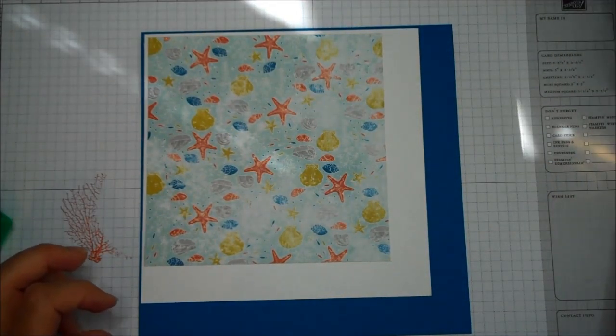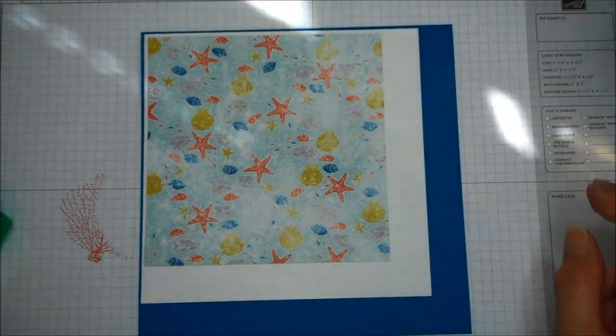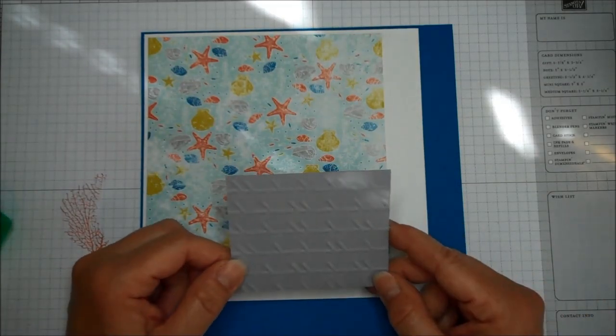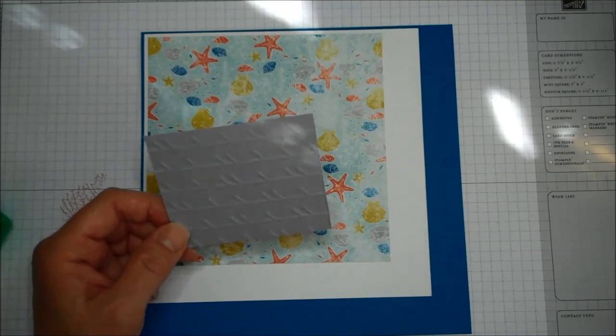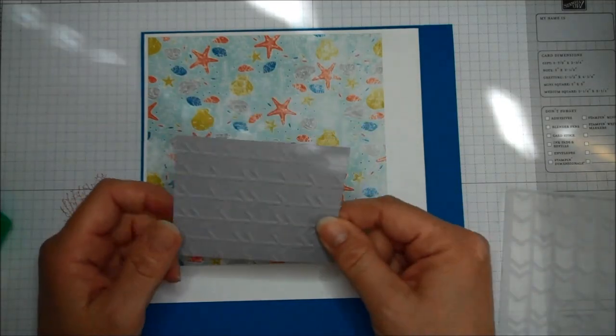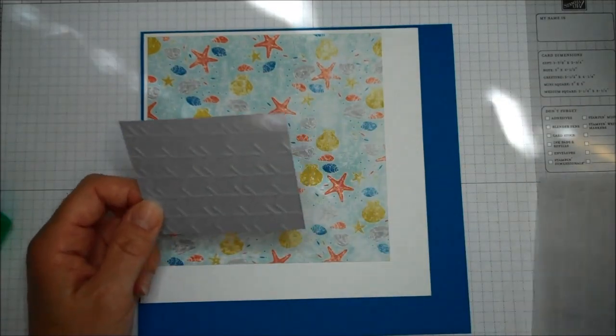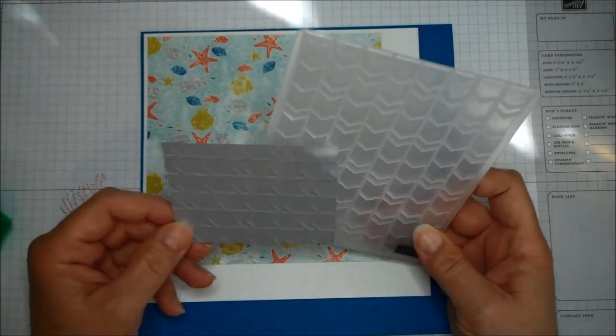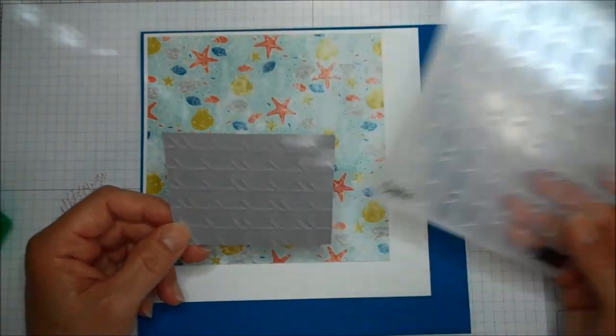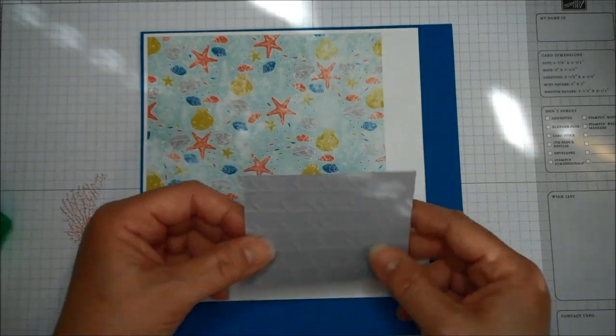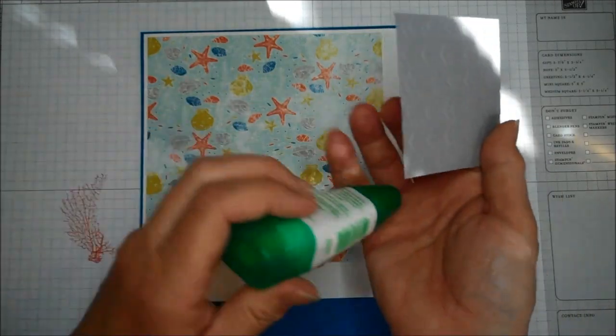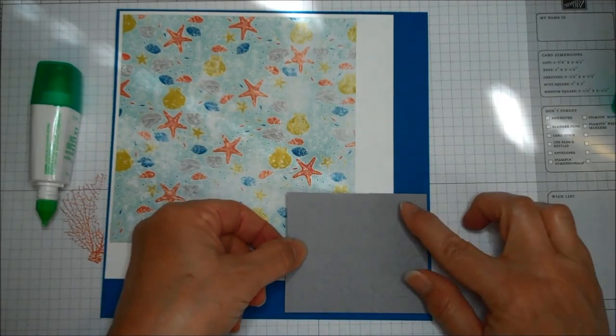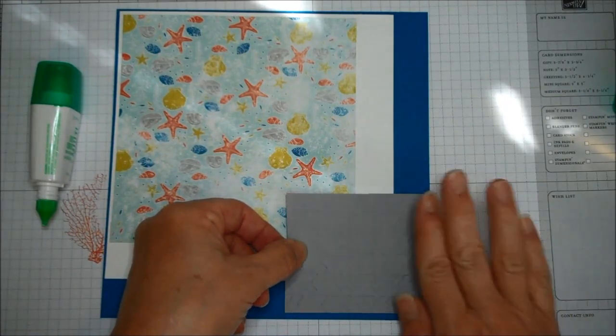And I've created a few elements to go on this page. The first thing I have cut 3½ by 3 inches is this piece of Smokey Slate cardstock. I ran it through the Big Shot with the new Arrows Embossing Folder, and this is in the Occasions Catalog, so you get this great image. I'm going to put this down just like this. I left a little more blue along the bottom.